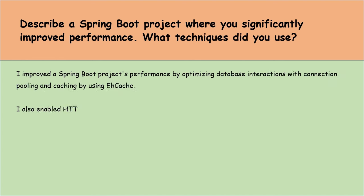You are designing a Spring Boot application that interfaces with multiple external APIs. How would you handle API rate limits and failures? To handle API rate limits and failures, I would use a circuit breaker to manage failures, implement rate limiting to avoid exceeding API limits, add a retry mechanism with exponential backoff for temporary issues, and use caching to reduce the number of requests. This approach helps keep the application reliable and efficient.